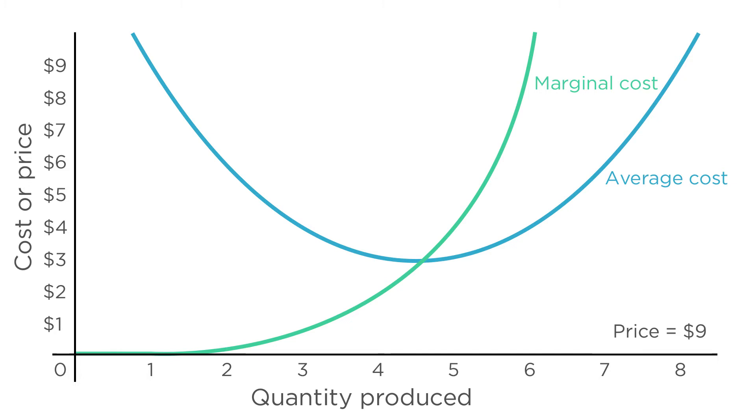Then what's the marginal revenue from the first unit? It can sell that unit at $9. So the marginal revenue is nine. What's the marginal revenue of the second unit? Same price, same marginal revenue. It's nine. So in a perfectly competitive market, marginal revenue is constant. It's a straight horizontal line and you draw it in wherever the market price is.